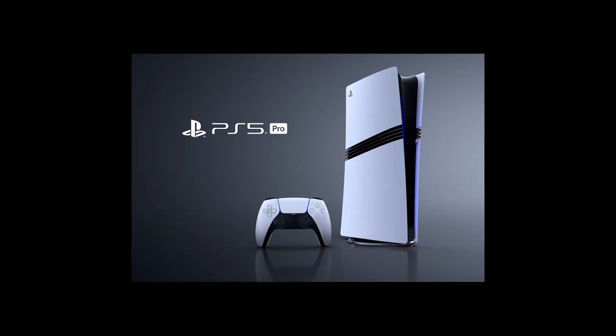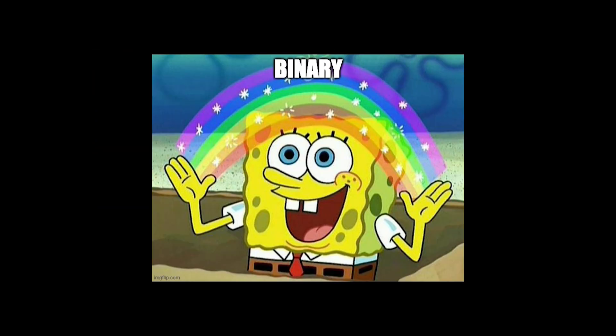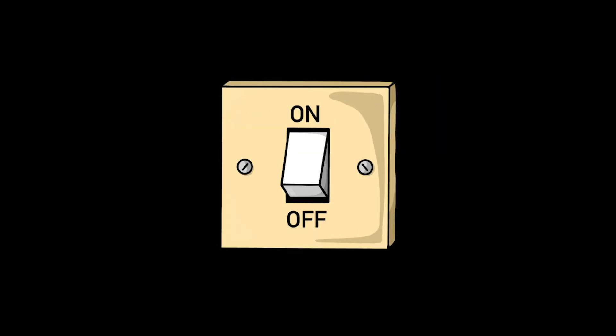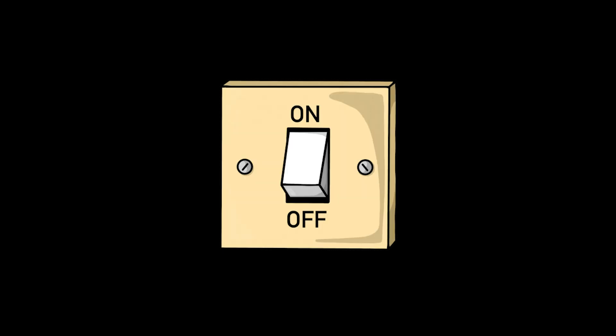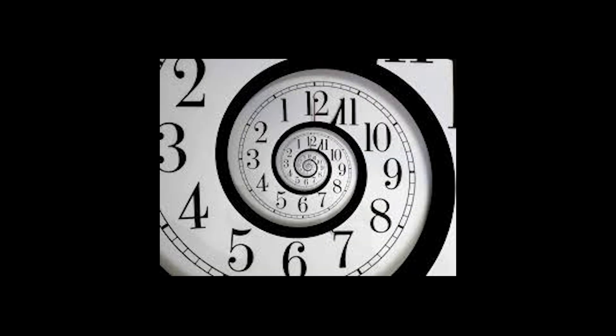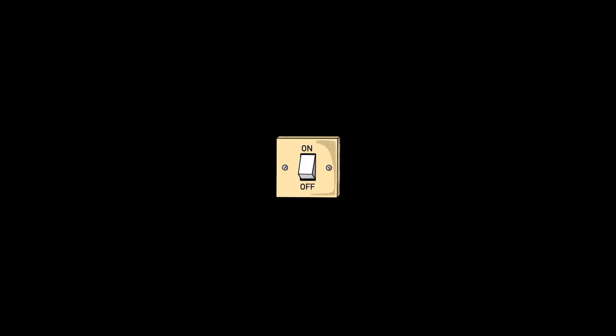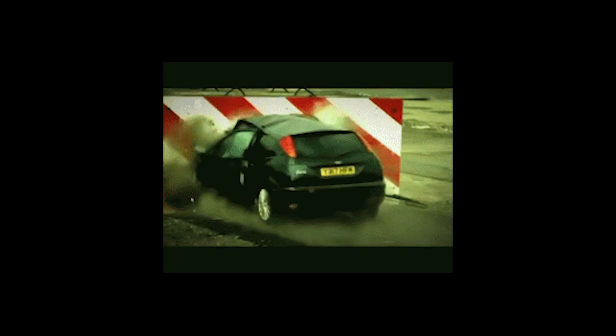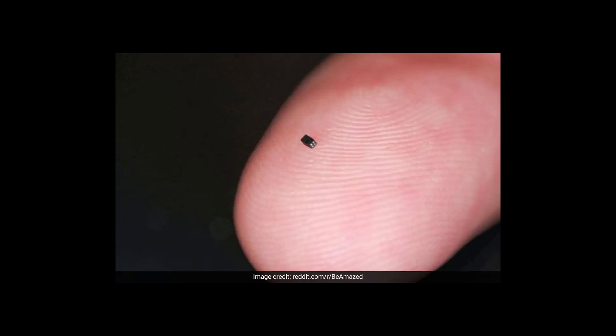Right now, every computer, phone, and gaming console on the planet runs on binary, ones and zeros. Everything is just a really fast series of electrical switches flipping on and off. And for decades, we made computers faster by shrinking those switches or transistors down to atomic sizes. But we've hit a wall. We physically can't make them much smaller.